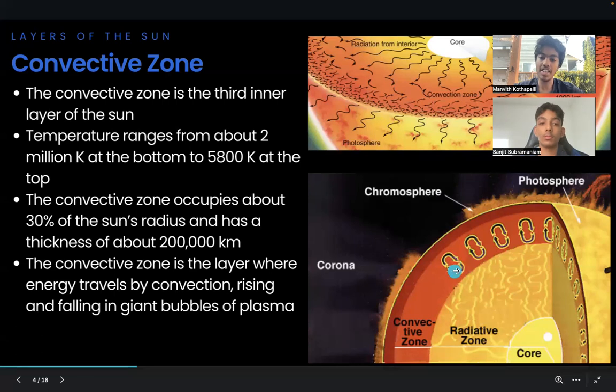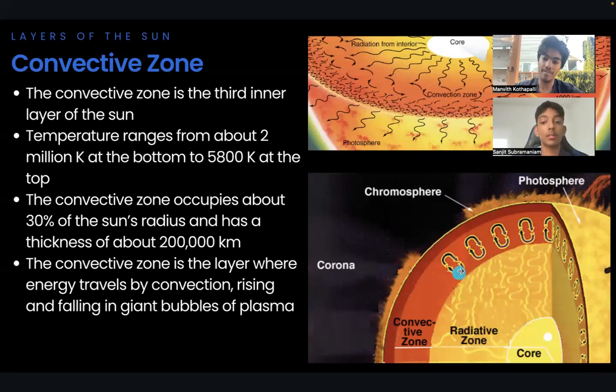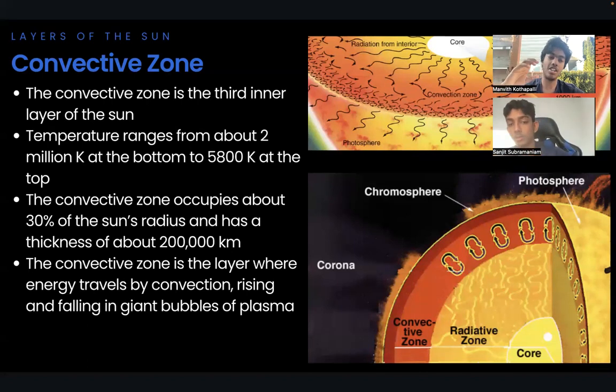If you look in the image, you can see that there's two arrows forming a loop. Basically, the plasma at the bottom is really heated. Because of the heat, it's less dense, and so it rises up. Once it rises up, it lets the photons and light go into the next layer. Because it's at the top, it's become cooler now, and that causes it to get more dense and then it sinks down. That's what convection is basically.